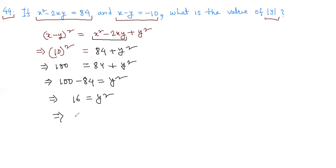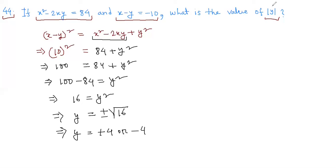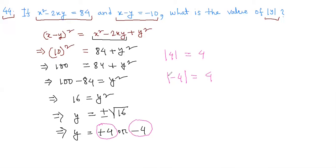So y squared equals 100 minus 84, which is 16. That means y equals plus or minus the square root of 16, so y equals plus 4 or minus 4. The modulus of plus 4 is 4, and the modulus of minus 4 is also 4. So the answer is 4 — just enter 4 in the box.